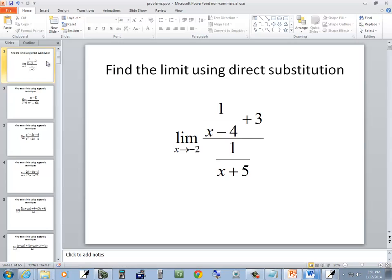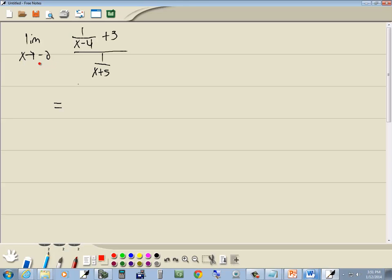And we want to do this using direct substitution again. So we're going to plug in the value we're approaching here, the negative 2, in for x. So we've got 1 over negative 2 minus 4 plus 3 all over 1 over negative 2 plus 5.